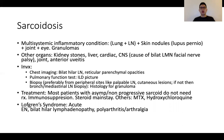Treatment depends on the severity of disease. In asymptomatic non-progressive sarcoid, patients may not require treatment. But in those with more severe disease, steroids are often the mainstay with consideration for other forms of immunosuppression. There is an entity known as Löfgren's syndrome, characterized by acute erythema nodosum, bilateral hilar lymphadenopathy, and polyarthritis or polyarthralgia. In patients with any of these features, it may be worthwhile asking for other associations to clinch this diagnosis.